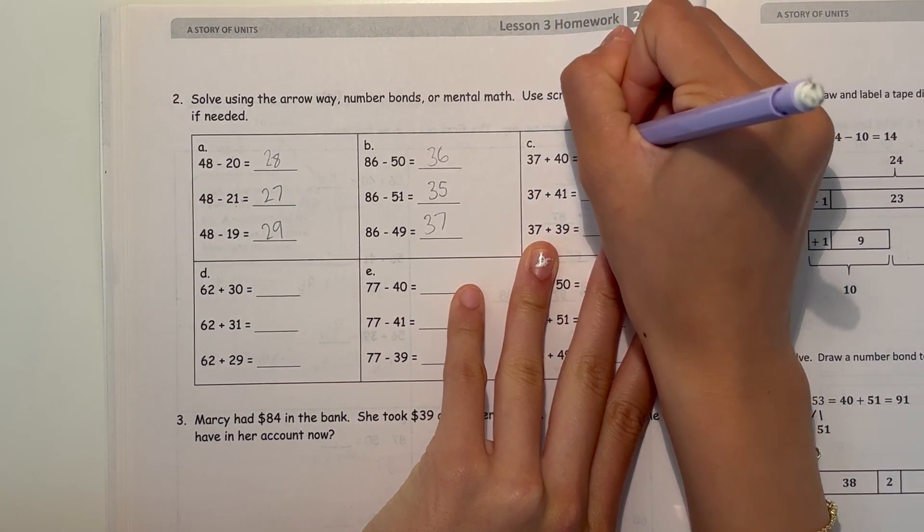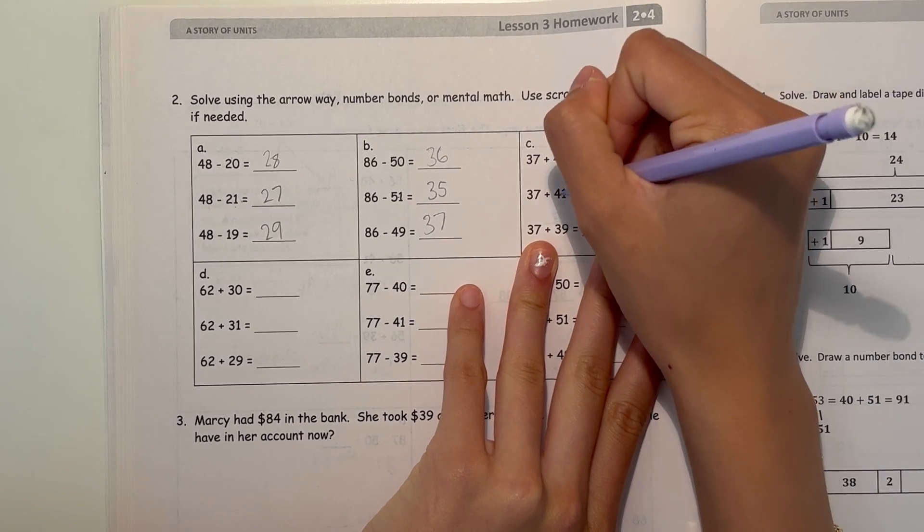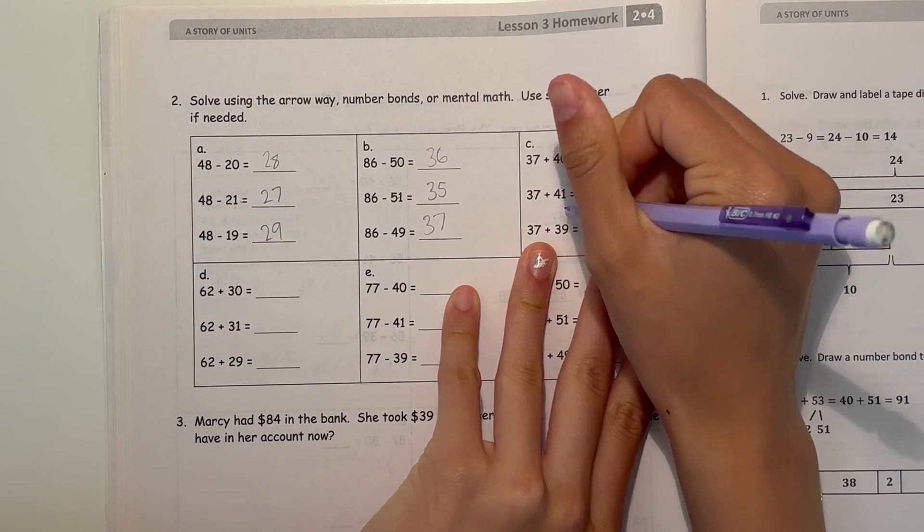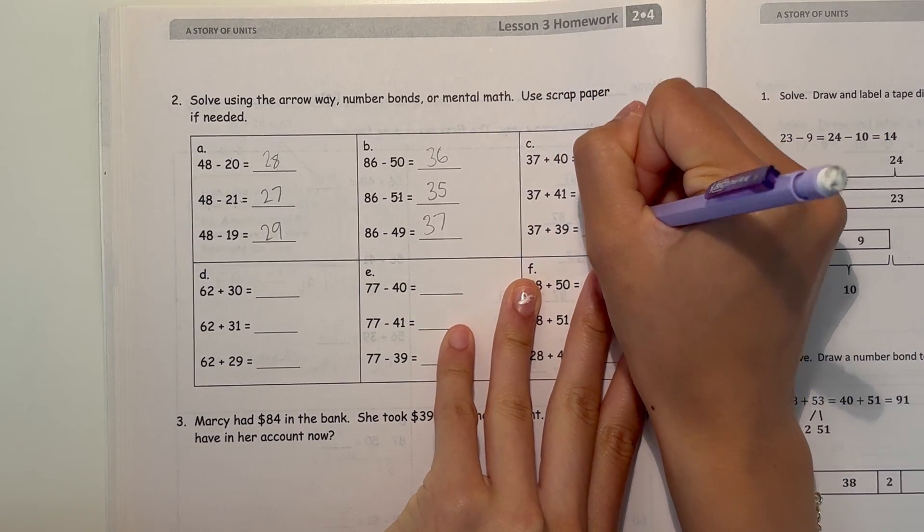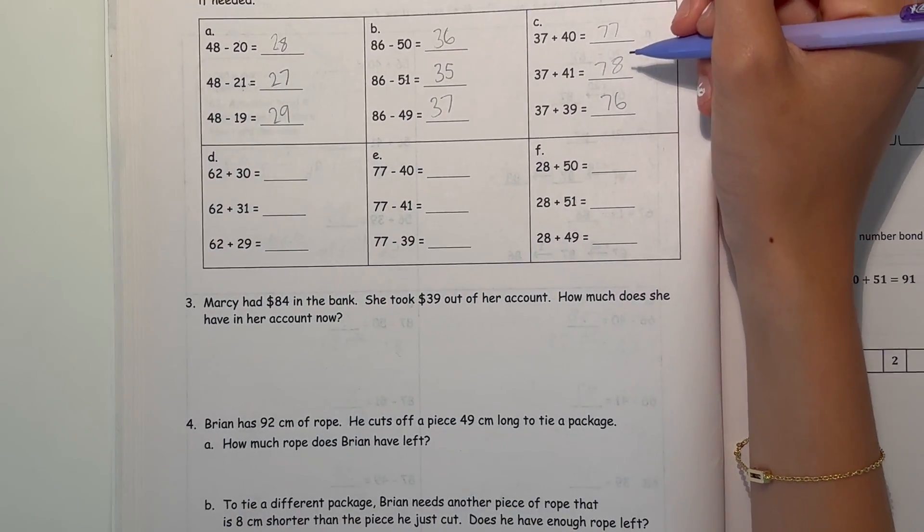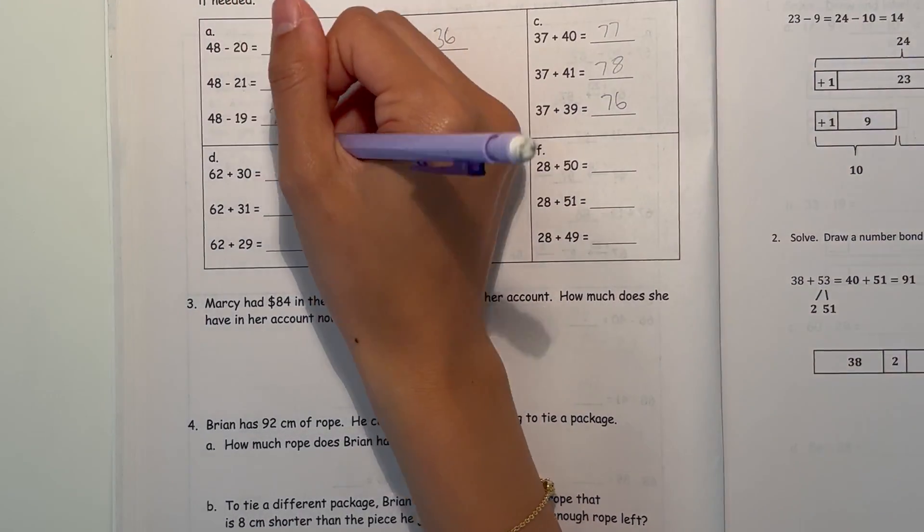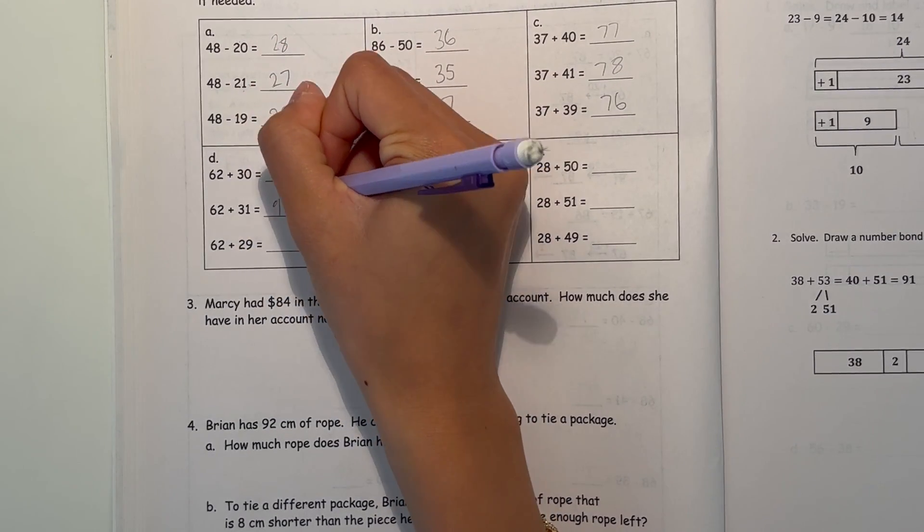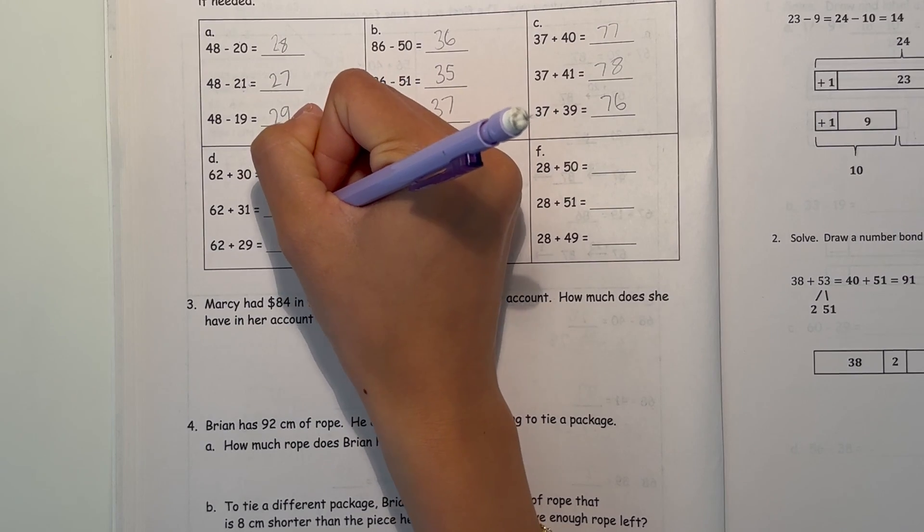So now C, 37 plus 40 is 77. So plus 41, that should be 78. And plus 39, that should be 76. Now D, 62 plus 30 is 92. If you're adding one more, that's 93, and if you're adding one less, then that's 91.